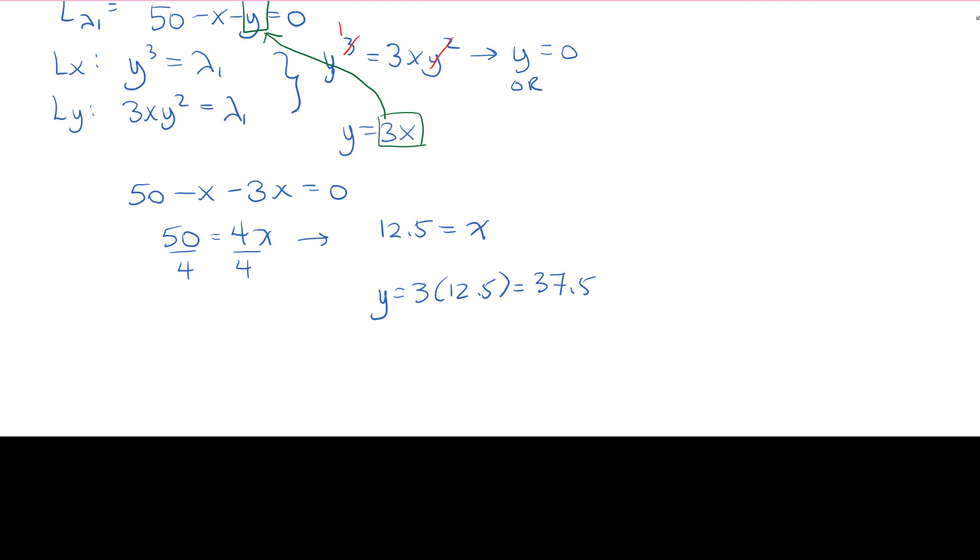Now before we assume that we have solved this problem, what we need to go check is what we assumed, which was the following. We assumed constraint number 2 was satisfied, which meant that we did not run out of coupons. And it cost us two coupons for item x and one for item y. So we're buying 12.5 units of item x and 37.5 of y. Is that indeed less than or equal to 60, which is our number of coupons that we have.